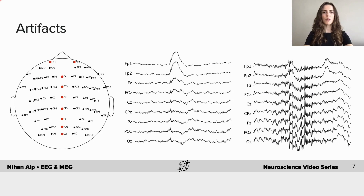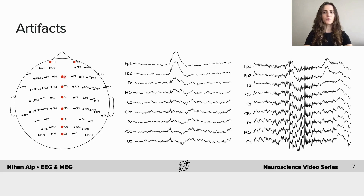In EEG, electrodes are mapped on the scalp in a specific way. This is a method we use to describe the location of electrodes on the scalp, with electrodes placed at either 10 or 20 percent of the total front-back or right-left distance of the skull. Each electrode has a letter identifying the lobe or area of the brain where the signal is read from. For instance, Z refers to the midline, P refers to parietal, O refers to occipital, and F refers to frontal. Even numbers refer to right hemisphere locations, while odd numbers refer to left hemisphere locations.